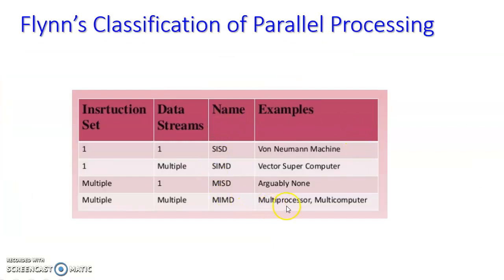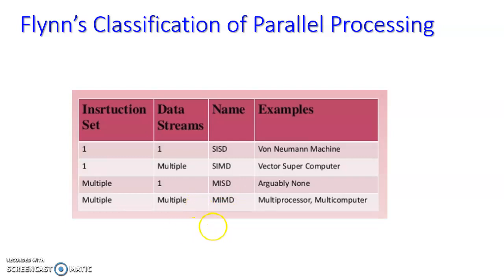In conclusion: SISD has a single instruction stream and single data stream; all traditional monoprocessor systems are examples. SIMD has one instruction stream and multiple data streams; all vector and array processing systems are examples. MISD has multiple instruction streams and a single data stream. MIMD has multiple instruction streams and multiple data streams; all true multiprocessors and multi-computers are examples of MIMD architecture. This is all about Flynn's classification. Thank you.